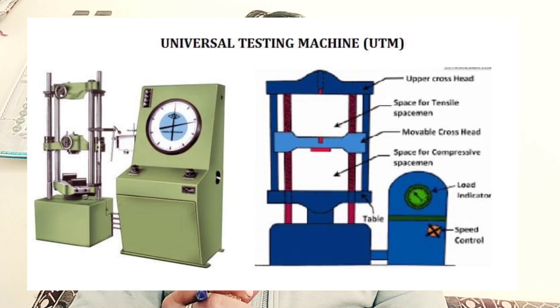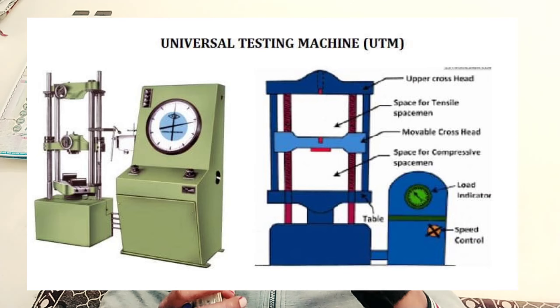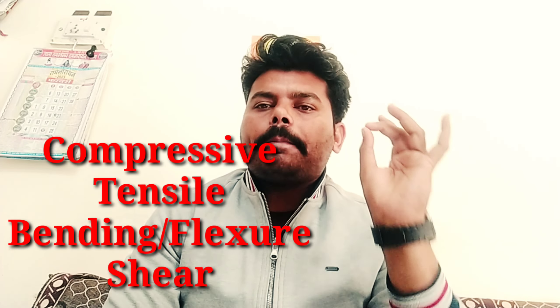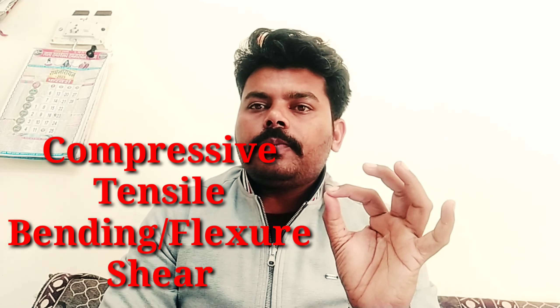On the screen you can see various types of compressive machines. We call it a UTM machine because UTM stands for Universal Testing Machine. This machine can calculate various types of loads: compressive, tensile, bending, and shear. But today we will focus on calculating the compressive load.